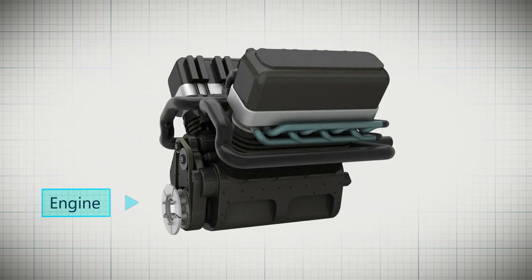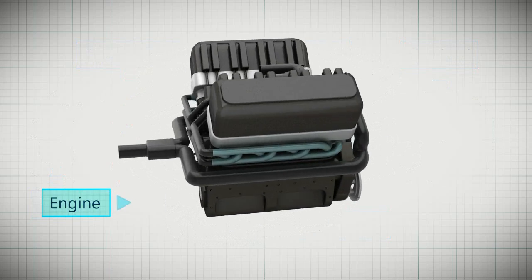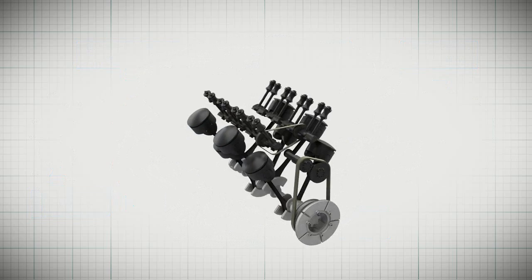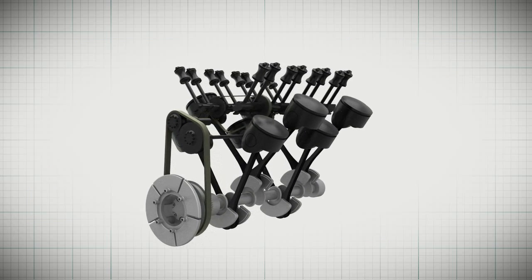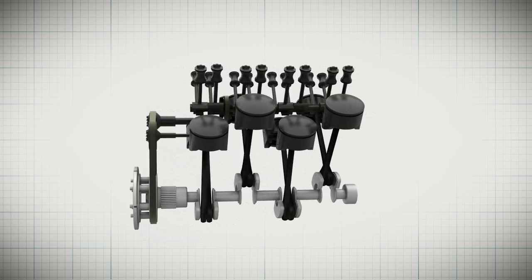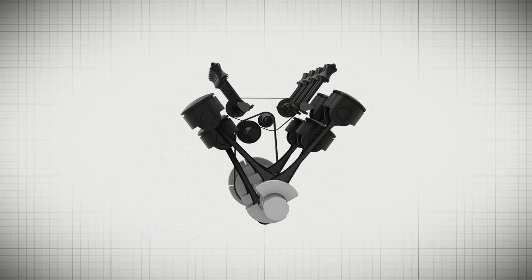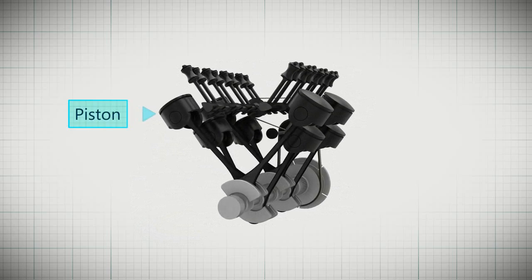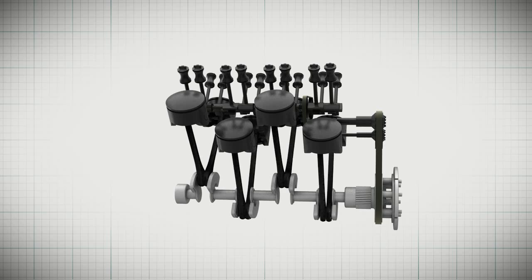Now let us look at the engine which drives the car. The engine contains intake and exhaust cams. The intake and exhaust valves take the combination of fuel and air in and out of the cylinders. The cylinders contain the piston and connecting rod which are rotated by the fuel. These cylinders are connected by a crank and flywheel.